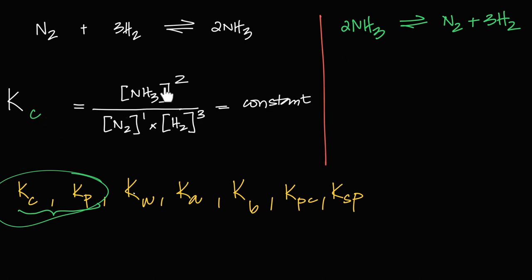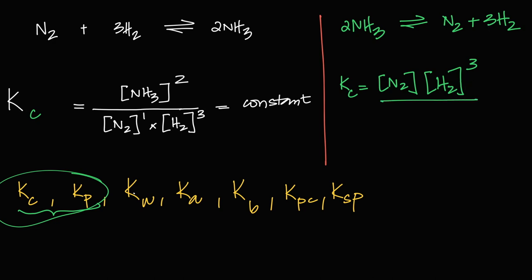If the Kc for N₂ + 3H₂ ⇌ 2NH₃ is one expression, then the Kc for the reversed equation 2NH₃ ⇌ N₂ + 3H₂ will be [N₂][H₂]³ over [NH₃]² — which is the reciprocal of the first. The units will also be different for each form. You can figure out the units from the expression itself.